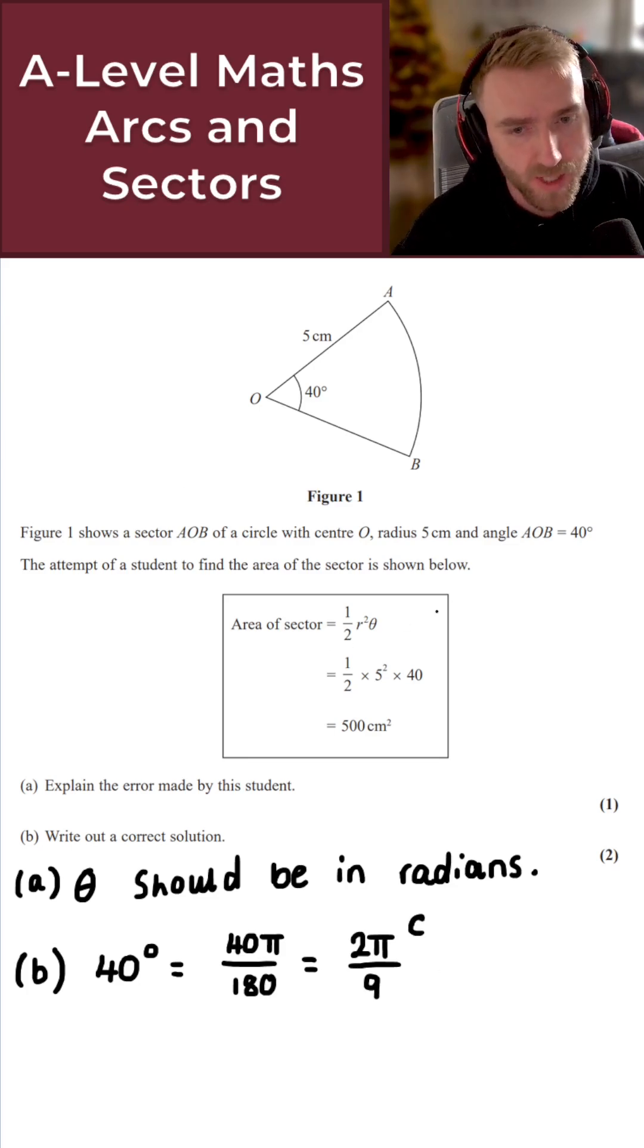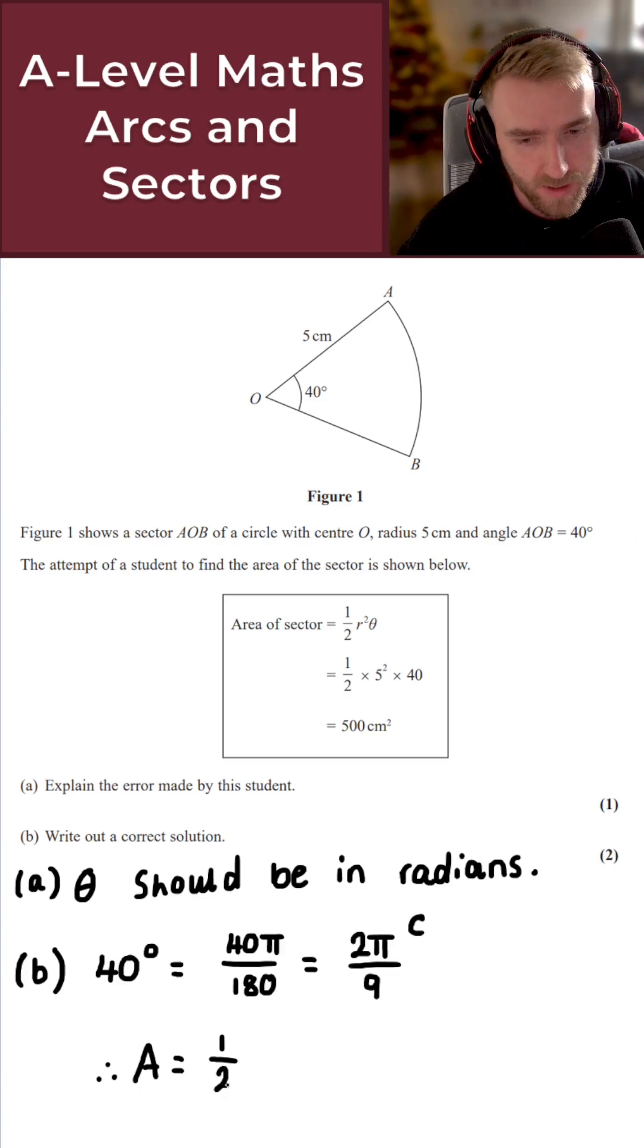And then if we apply that to this formula here for the area of a sector, the area A is equal to a half times the radius squared, so times it by 5 squared. Then we times this here by 2 pi over 9. So let's just simplify this. I've got 1 over 2 times 25, so that's 25 over 2 times 2 pi over 9. So we get 50 pi over 18 here.